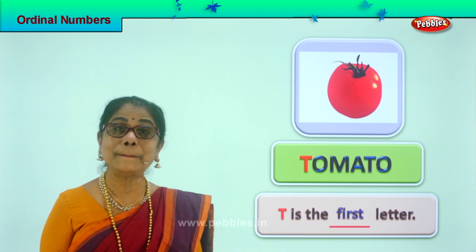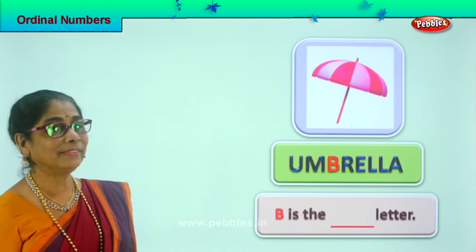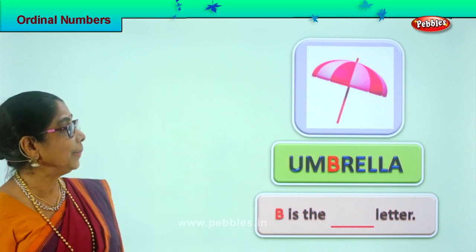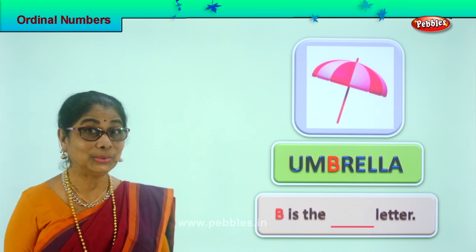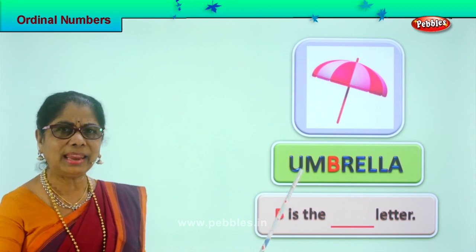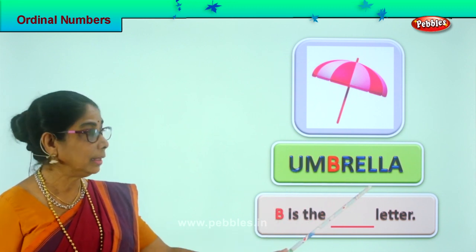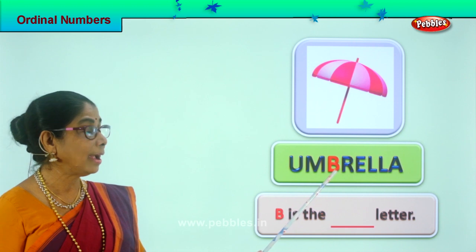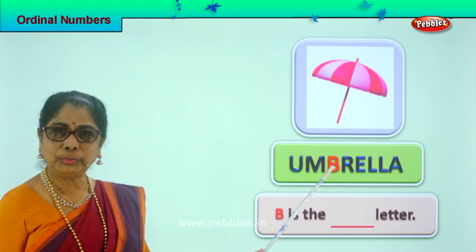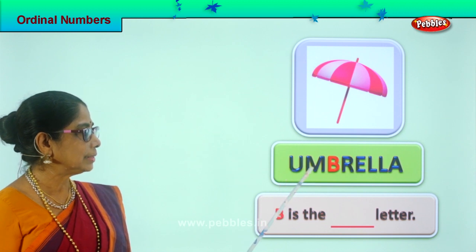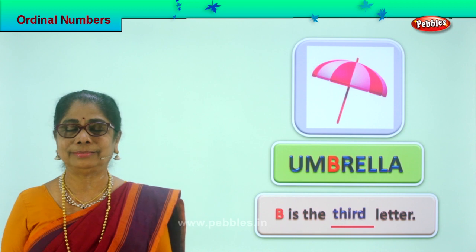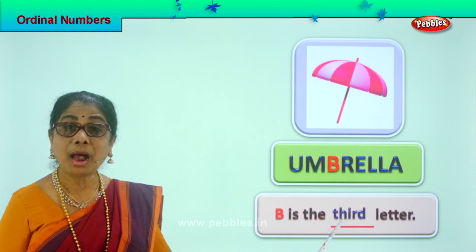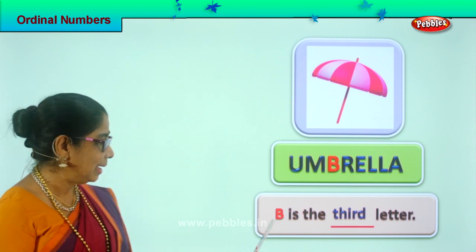Is it interesting? Did you enjoy? Let's look at another picture. What do you have? A lovely colored umbrella! You use an umbrella to go out in the sun or the rain. Spell umbrella: U-M-B-R-E-L-L-A. Which is the colored letter? B. What is the ordinal position? First, second — B is the third letter.